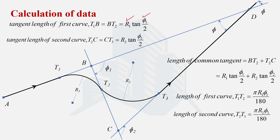To set out this reverse curve, the same two methods used for simple circular curves can be applied — by taking offsets or by the deflection angle method. We can set out the two arcs and then join them together to complete the setting out of the reverse curve. This is all from this video, where we learned what a reverse curve is, how it differs from a compound curve, the notations used, and how the calculations are done. In the next video we will solve a problem related to the reverse curve. Thank you for watching.